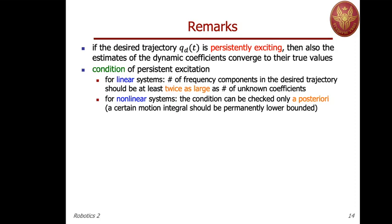Only if the estimates have converged to the true ones will changing the trajectory maintain zero error from the start. The fact that non-true dynamic coefficients can still achieve trajectory convergence means there is some null space in the regressor matrix — different coefficient values work fine for a given trajectory. But those working for one trajectory may not work for a new one, unless they are the true values that work for any trajectory.